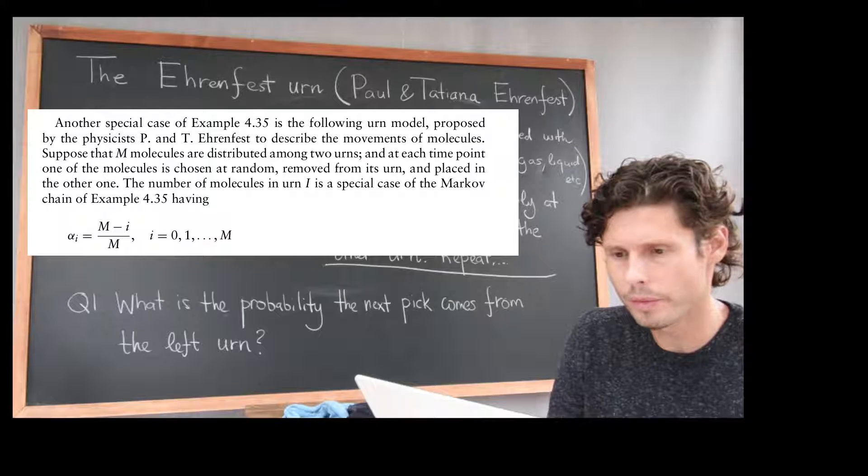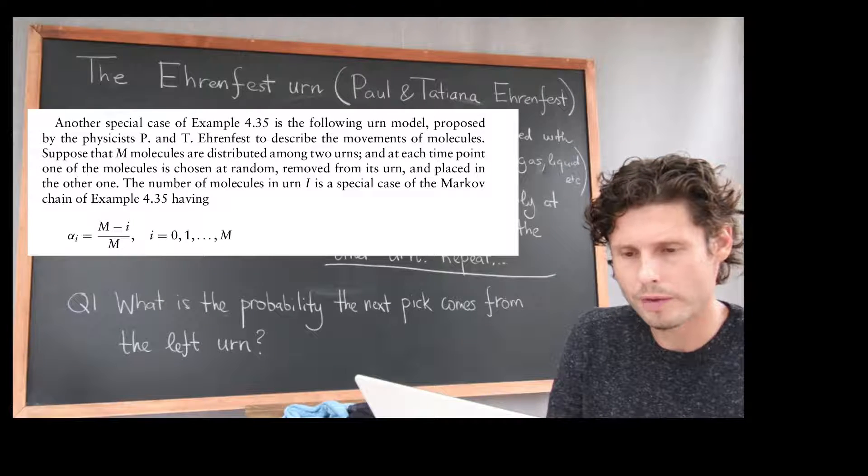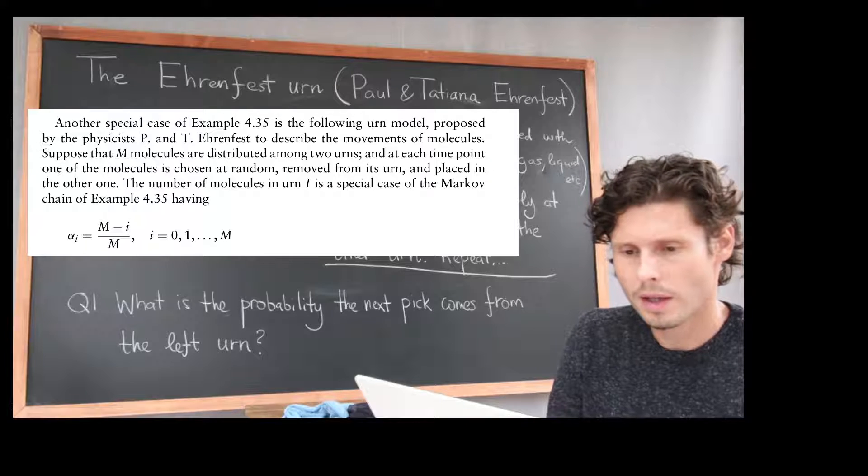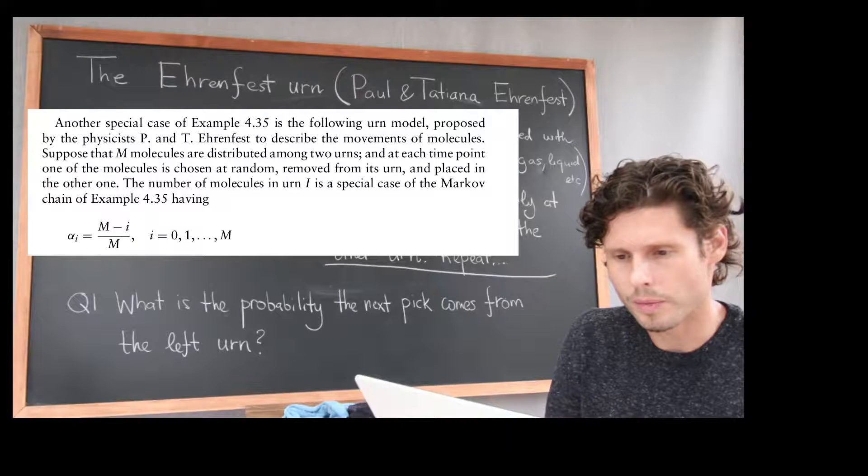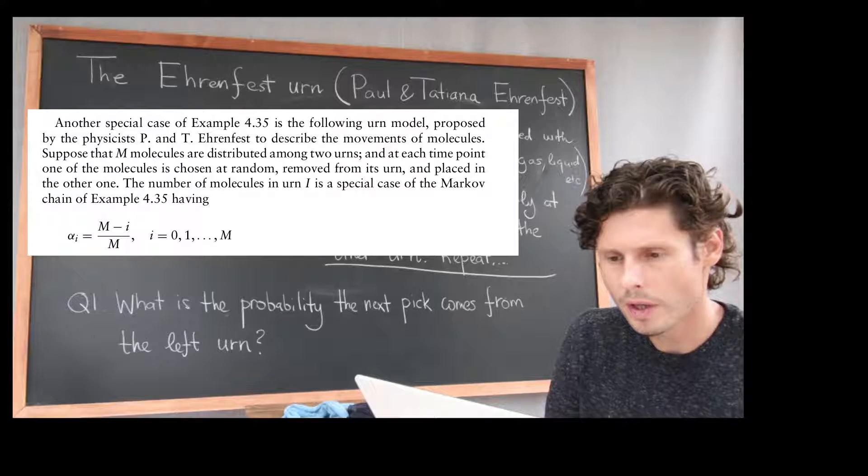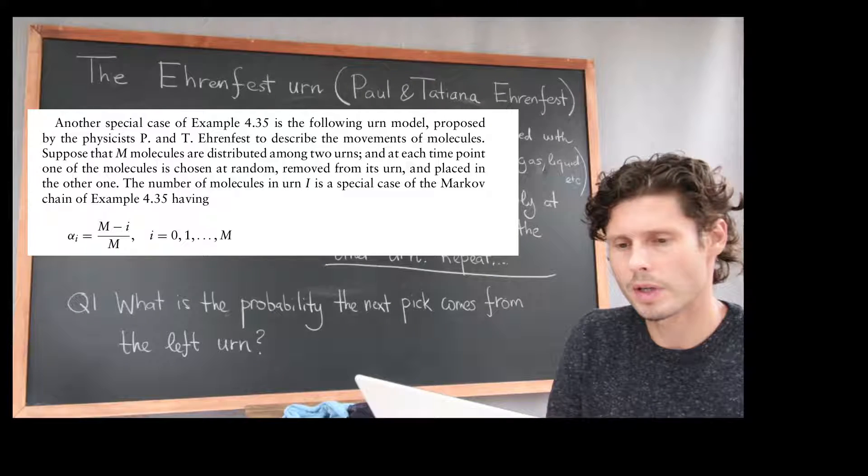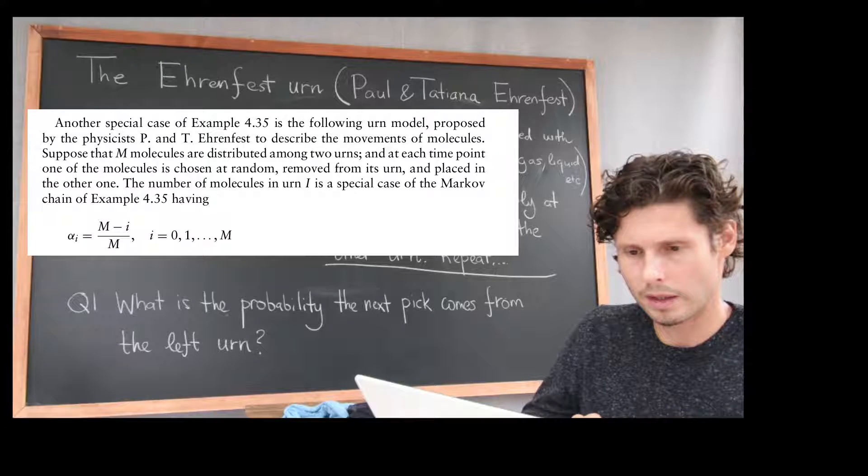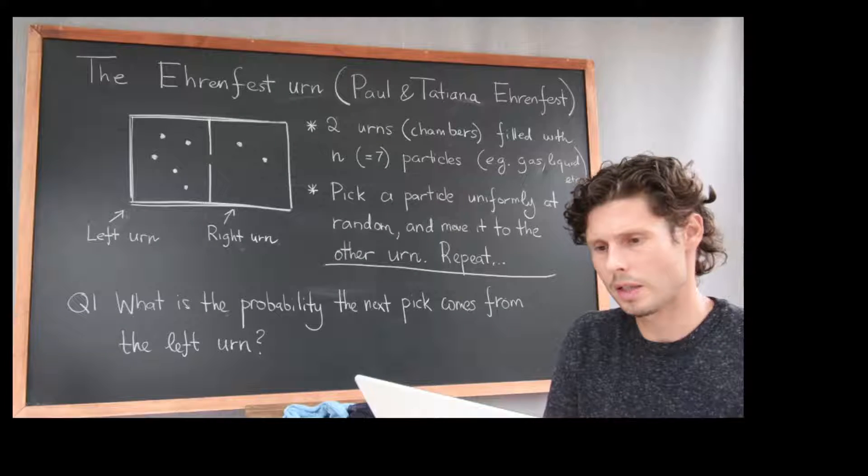Some of these things may be familiar to you depending on the content that you had in 160A. The Ehren model proposed by physicist P and T, so P and T stands for Paul and Tatiana. She in fact was a mathematician, as I recall, to describe the movement of molecules. This example does come out of physics, and it has a fairly rich history and a lot of debates around it.